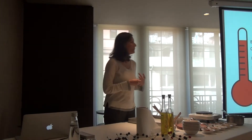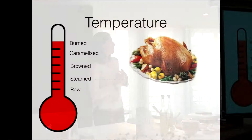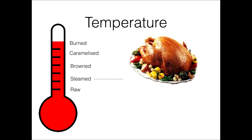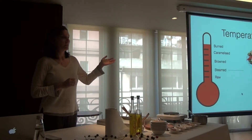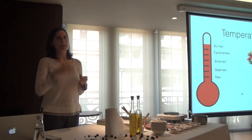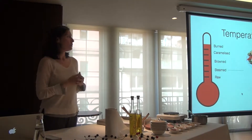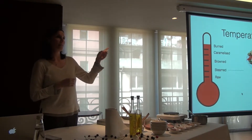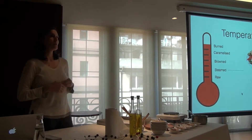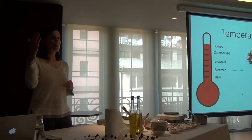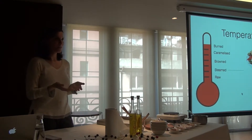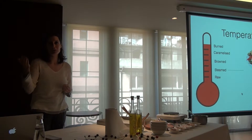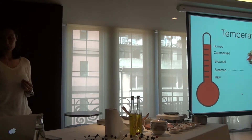Why do we cook? Basically, we raise the temperature to get nice tasty foods. Up to 100 degrees Celsius, we can get foods to be steamed, but steamed food will not look and taste as nice. That's why we want to raise the temperature further up, and that is why we need the oil. You can only heat water up to 100 degrees, and oil can go much higher.